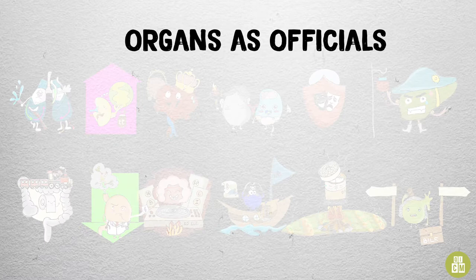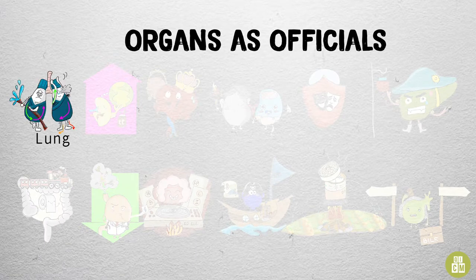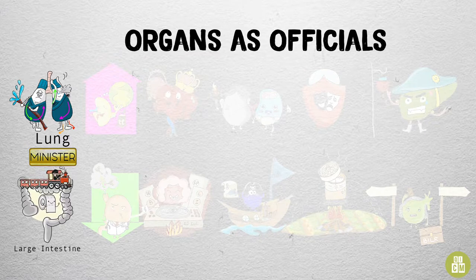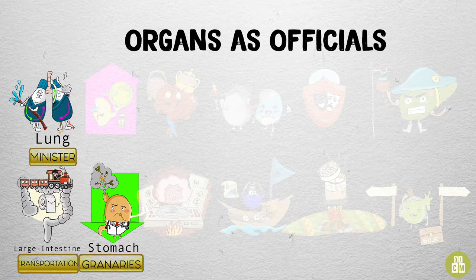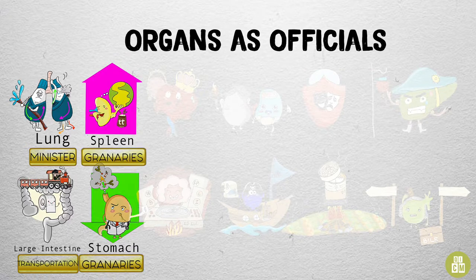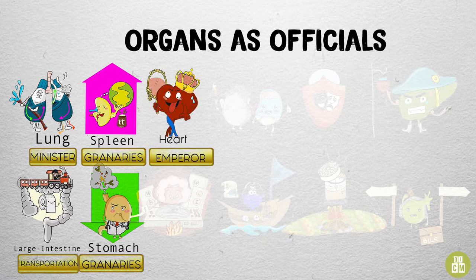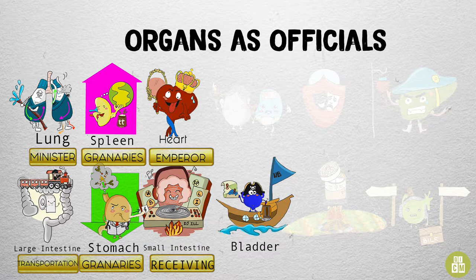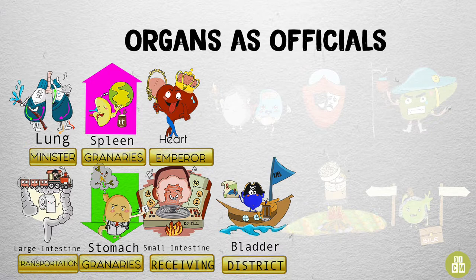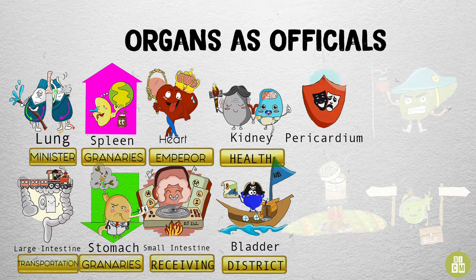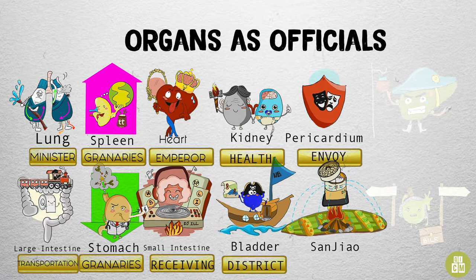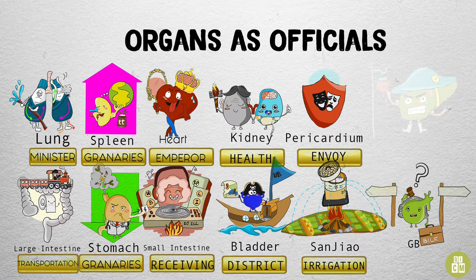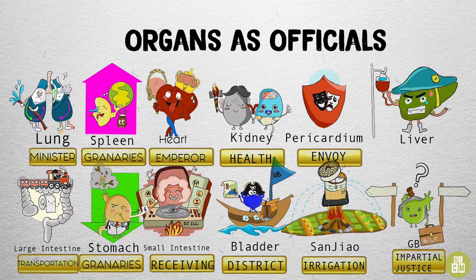The organs as officials are as follows: Lung — minister or chancellor. Large intestine — official of transportation. Stomach — official of the granaries. Spleen — official of the granaries. Heart — emperor or monarch. Small intestine — official of receiving. Urinary bladder — district official. Kidney — official of health. Pericardium — envoy, ambassador or resident. Sanjiao — official of irrigation. Gallbladder — impartial justice. Liver — general.